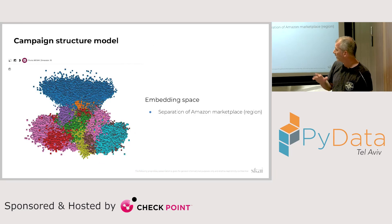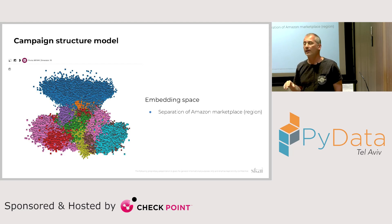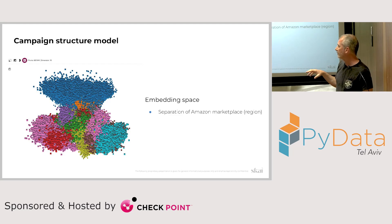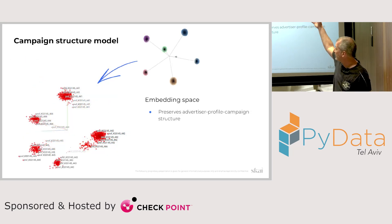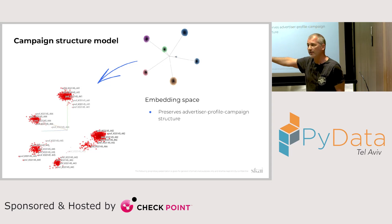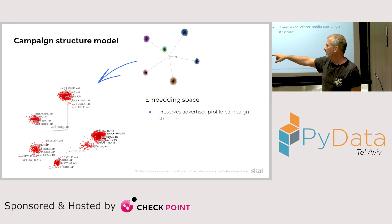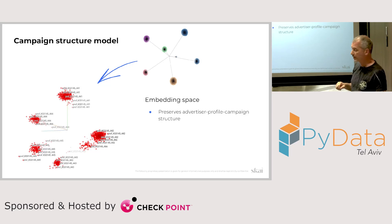Looking at the embedding space colored by Amazon region, we can see that campaigns are grouped relatively nicely according to region, and the regions themselves are relatively separated and homogeneous. That gives us confidence this information is well embedded. If I take one of the advertiser examples and look at its specific embedding for those campaigns, we can see that specific profiles are clustered together with nice separation between profiles — confirming the structure information is well embedded in the vector representation.